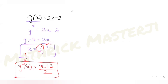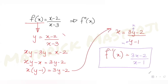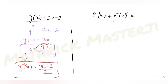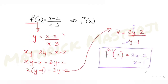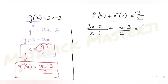Now that I have both inverse functions, I can apply the given condition: f inverse of x plus g inverse of x equals 13 over 2. So (3x minus 2) divided by (x minus 1), plus (x plus 3) divided by 2, equals 13 over 2.